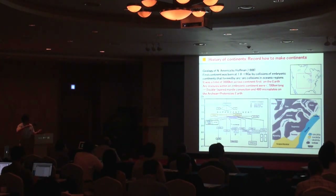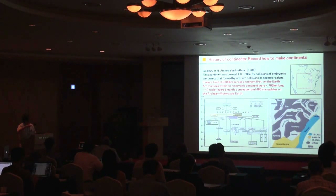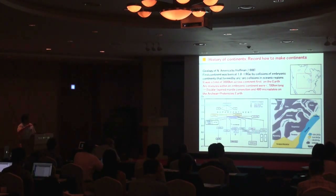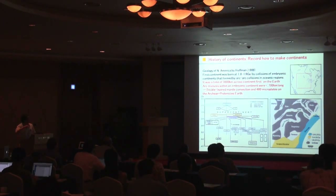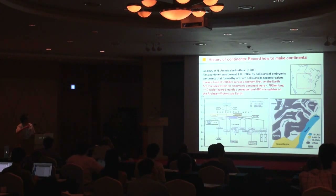The first continent was born at about 2 billion years, and its size is approximately 3,000 kilometers — the thickness of the whole mantle — suggesting the birth of big plates, same as today. But if you go back over 2 billion years, there was a double layer of convection, and the plate size was less than 700 kilometers, the thickness of the upper mantle. Therefore, double-layer mantle convection and 400 microplates on the Earth.